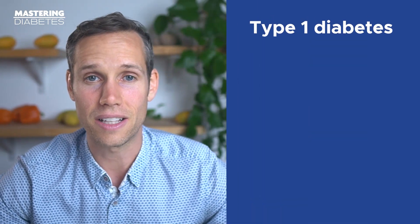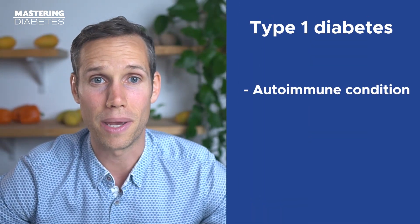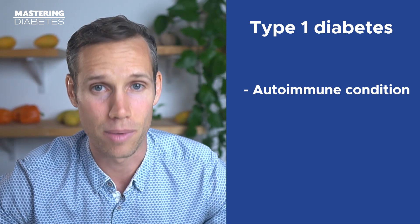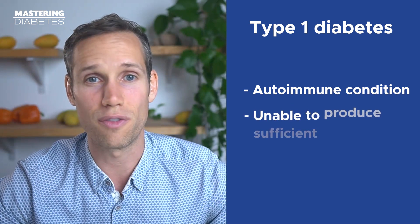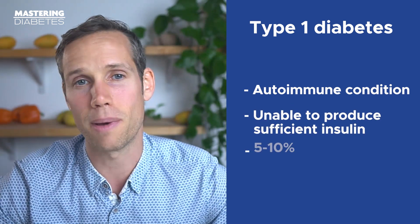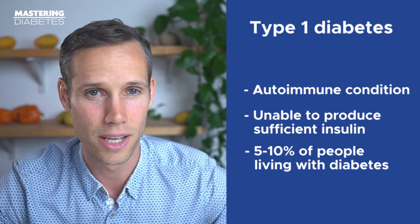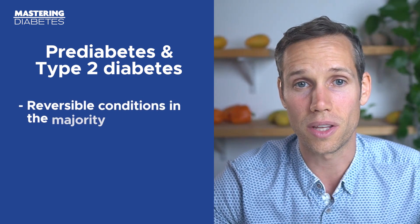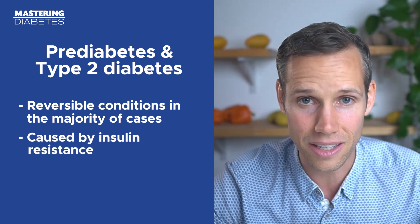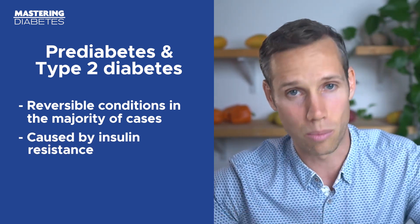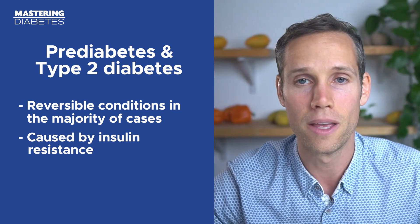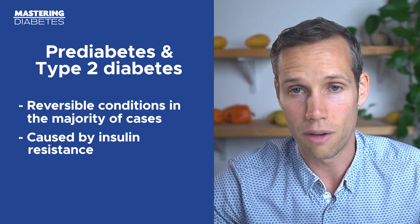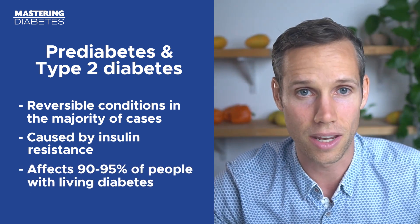Type 1 diabetes is classified as an autoimmune condition in which the beta cells in your pancreas have been damaged, leaving your body unable to produce sufficient quantities of insulin. This affects about 5 to 10 percent of people living with diabetes. Pre-diabetes and type 2 diabetes, on the other hand, are reversible conditions in the majority of cases and are caused by insulin resistance. Type 2 diabetes affects about 90 to 95 percent of people living with diabetes. In this video, we're going to focus mainly on pre-diabetes, type 2 diabetes, and gestational diabetes.